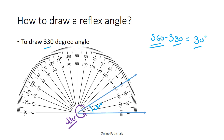Whenever you are asked to draw a reflex angle, make sure you find the internal angle first by subtracting from 360 degrees — one complete turn. Subtract the reflex angle you want to draw to get the internal angle, draw the internal angle, and then mark the outer angle as your reflex angle. We do this because the protractor scale only goes from 0 to 180 degrees. So for 330 degrees, we use 360 minus 330 to get the internal angle, draw it, and the outer angle is our reflex angle.